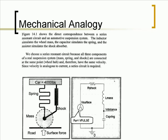The figure below shows the direct correspondence between a series resonant circuit and an automotive suspension system. The inductor simulates the wheel mass, the capacitor simulates the spring, and the resistor simulates the shock absorber. We choose a series resonant circuit because all three components of a real suspension system, mass spring and shocks, are connected at the same point, the wheel hub, and therefore have the same velocity. Since velocity is analogous to current, a series circuit is required.